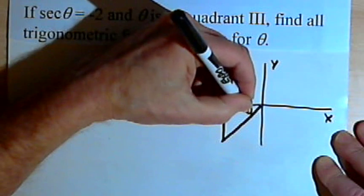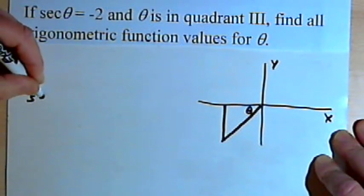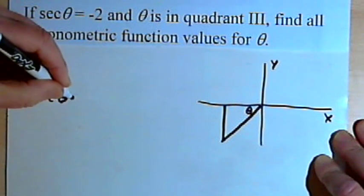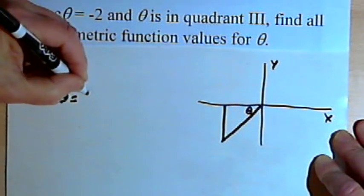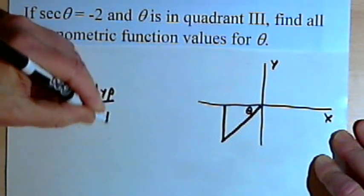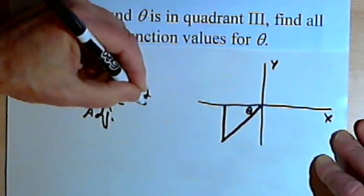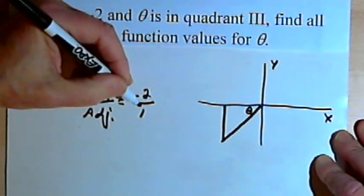The angle at the origin is going to be theta. I'm told that the secant of theta is negative 2. Now I know the secant is the hypotenuse over the adjacent side. And if that equals negative 2, I'll think of that negative 2 as a fraction, negative 2 over 1.